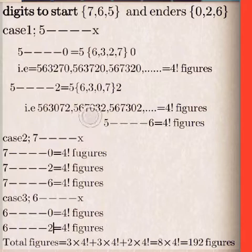The total number will be 3 times 4 factorial plus 3 times 4 factorial plus 2 times 4 factorial, which is 8 times 4 factorial. When you compute that, it equals 192 figures.